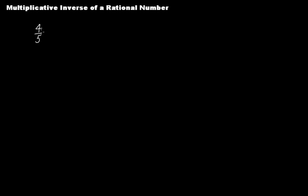Say we have a rational number 4 over 5. If I ask you what number should we multiply 4 over 5 with so that we get 1 as the product, you will instantly say that number will be 5 over 4. Because if you multiply 4 with 5 you get 20, and if you multiply 5 over 4 you get 20, and this gives you 1.